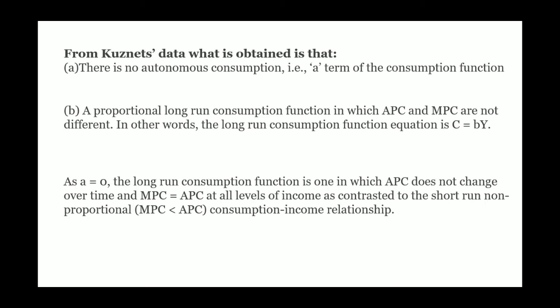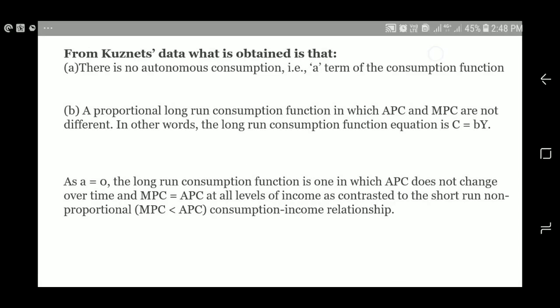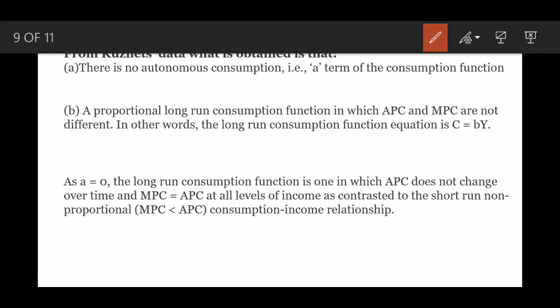Kuznets's data proved there is no autonomous consumption — consumption expenditure starts from zero itself. The long-run consumption function is proportional: C = bY, where autonomous consumption A equals zero. APC does not change over a period of time, meaning MPC equals APC in the long run.